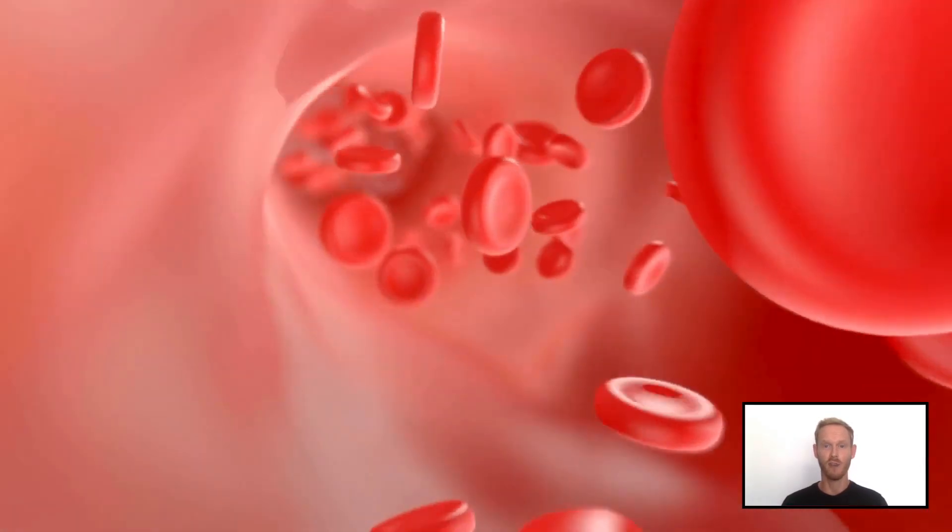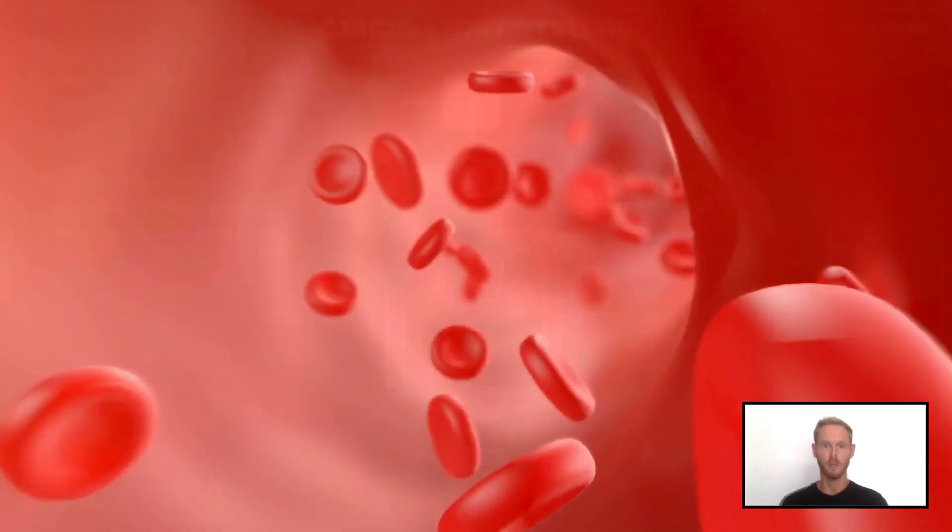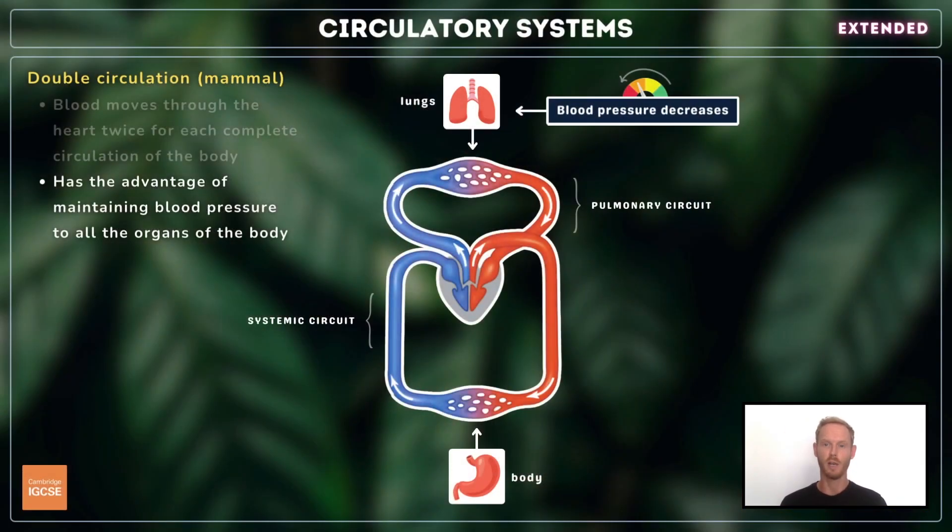Now a double circulation has the advantage of maintaining a high blood pressure to all the organs of the body. Blood loses pressure in the narrow capillaries of the lungs, but unlike the single circulation of fish, it passes through the heart a second time. This second passage serves to increase the pressure once again, so that oxygen can be efficiently delivered to even the most distant tissues.